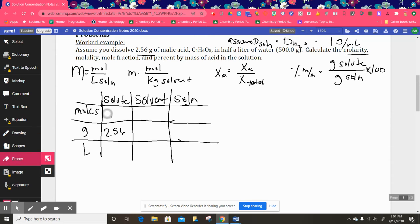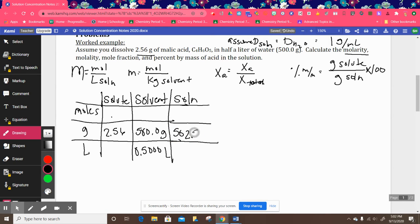And then this is 500 grams of water. That is a solvent, so I know how many grams of water that I have. And since the density of water is 1 gram per milliliter, that also means that we have 0.5000 liters of solvent. It also means we have 502.56 total grams of solution.